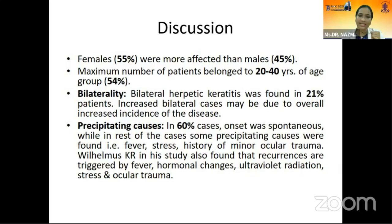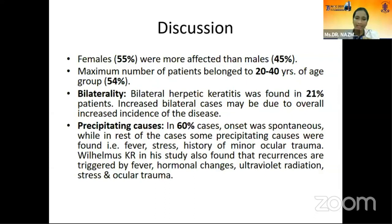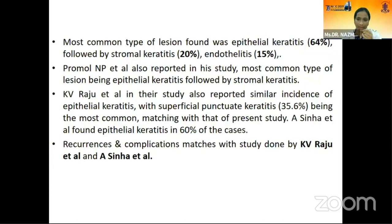In our study, females were more affected than males. The maximum number of patients belonged to the 20 to 40 years age group. Bilateral cases were found in 21 percent. A precipitating cause was identified in 40 percent of cases; onset was spontaneous in the rest. Other studies, such as Wilhelmus et al., also found triggering factors including fever, hormonal changes, UV radiation, and stress. The most common type of keratitis found was epithelial keratitis, followed by stromal keratitis and then endotheliitis.